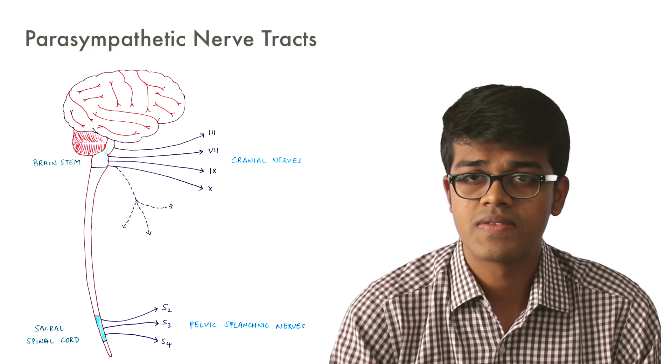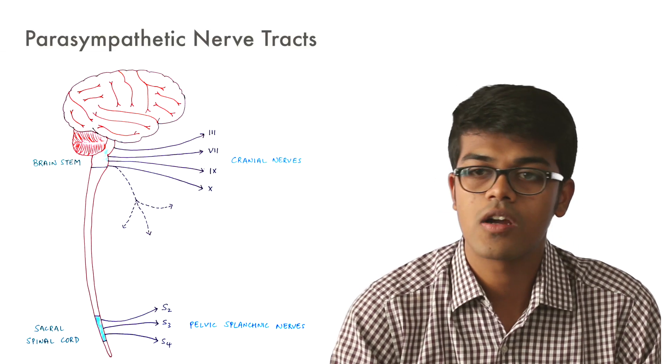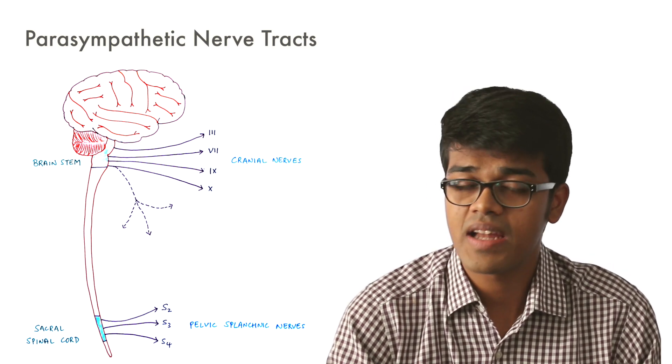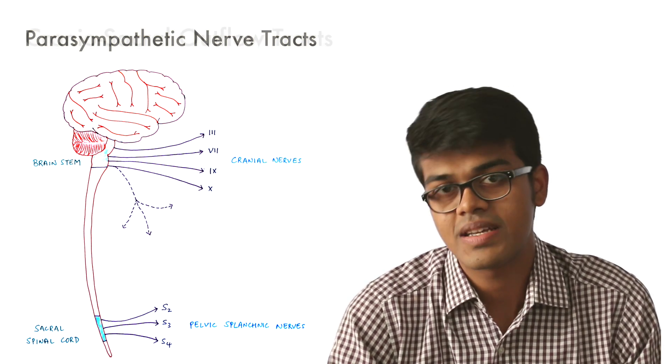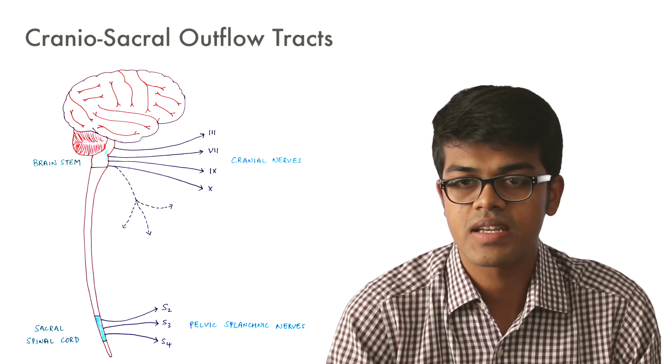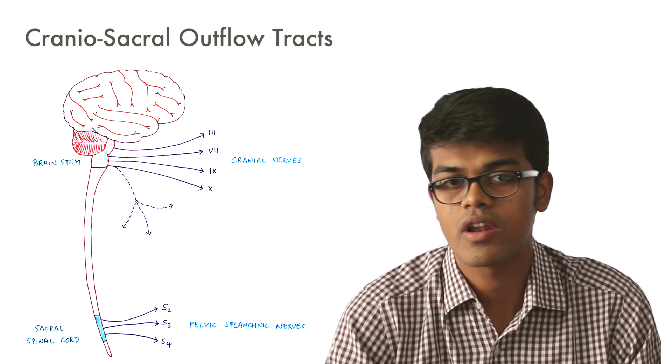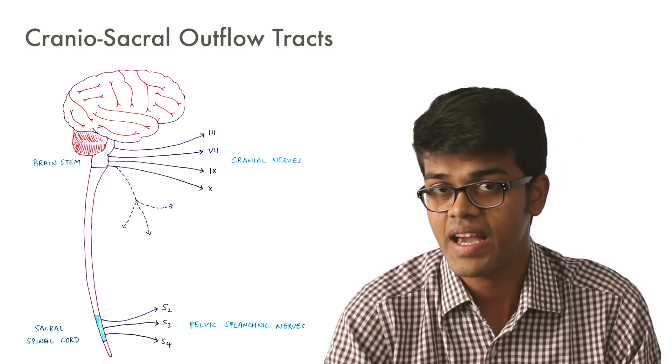The parasympathetic nerves have two outflow tracts from the spinal cord: the cranial and the sacral. As a result, the parasympathetic outflow is also known as the craniosacral outflow. Similar to the sympathetic system, the parasympathetic system has preganglionic and postganglionic fibers leading to and from the ganglia.